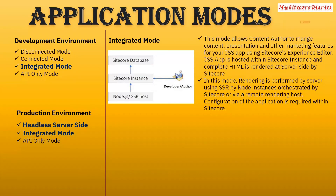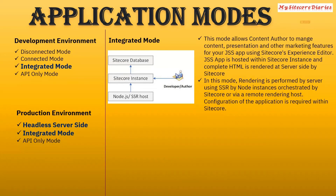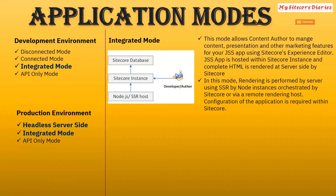Integrated mode allows content authors to manage content, presentation, and other marketing features for your JSS app. The app is hosted within the Sitecore instance and rendered completely server-side using Node.js SSR within Sitecore. The content authors also manage data and the rendering configuration, which is all required within Sitecore.